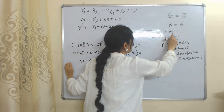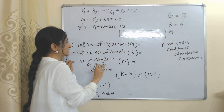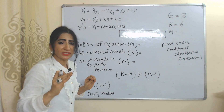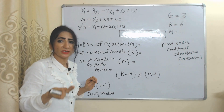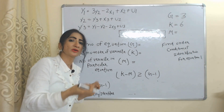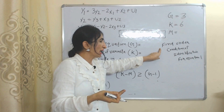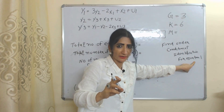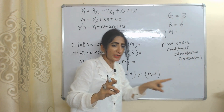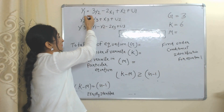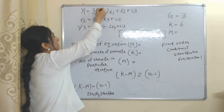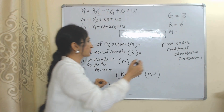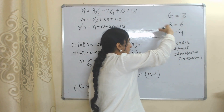Now we will find the value of M. M means the total number of variables in the particular equation we are going to identify. We have to find the order condition for equation 1, so our particular equation is equation 1. Counting the variables in equation 1, we have a total of 4 variables. So M equals 4.